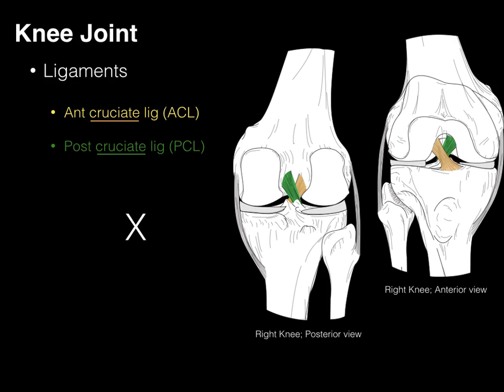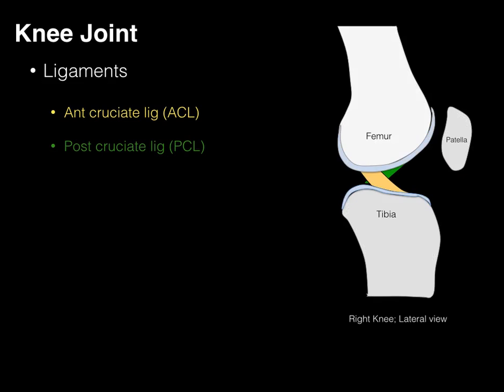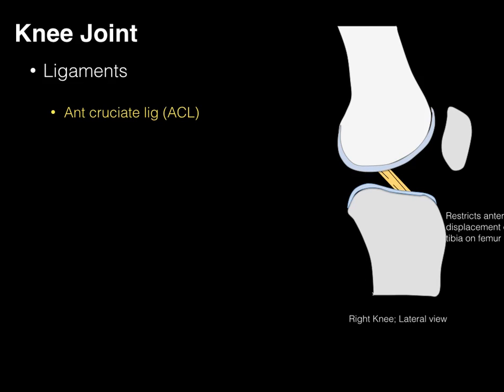These anterior and posterior ligaments make an X or cross within the center of the knee joint. The functions of both ligaments can best be demonstrated in a lateral view of the femur and tibia. The anterior cruciate ligament restricts anterior displacement — or translation — of the tibia on the femur. When the femur moves forward, the ACL becomes taut and tight, helping to restrict that forward movement of the tibia.